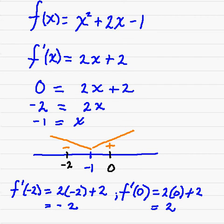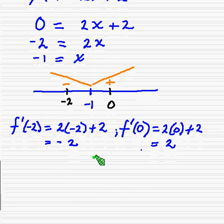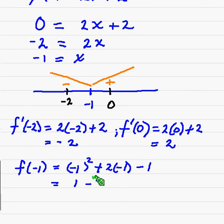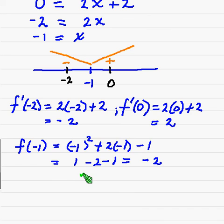To actually find the actual point on the graph, what you're going to do is take negative 1 and plug it back into the original function. So f of negative 1 is equal to negative 1 squared plus 2 times negative 1 minus 1. Negative 1 squared is 1, that's going to be negative 2, so that's negative 3 plus 1 is negative 2. And so the actual point is negative 1 comma negative 2, and this is a minimum.